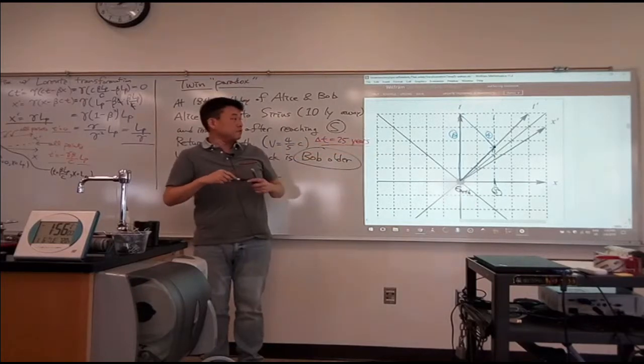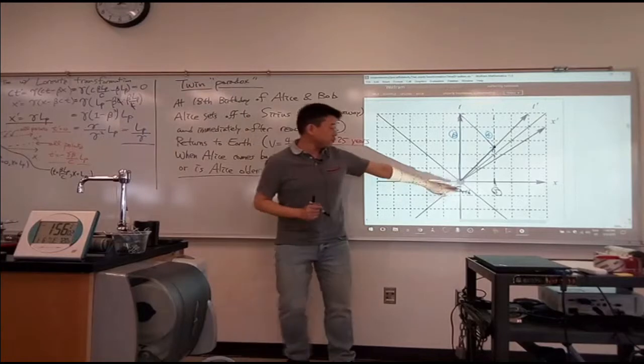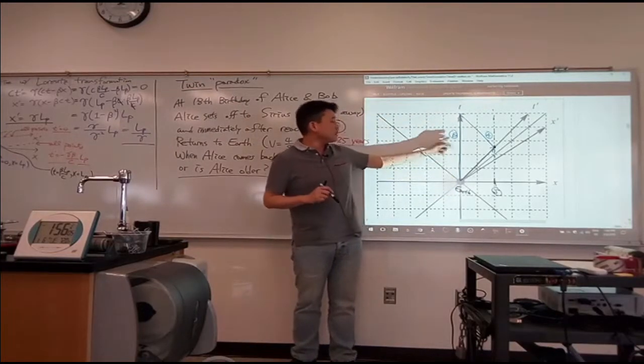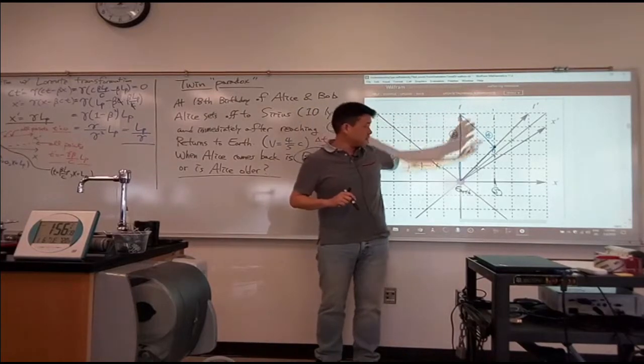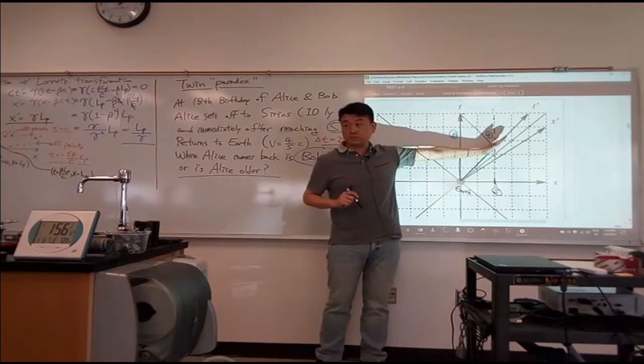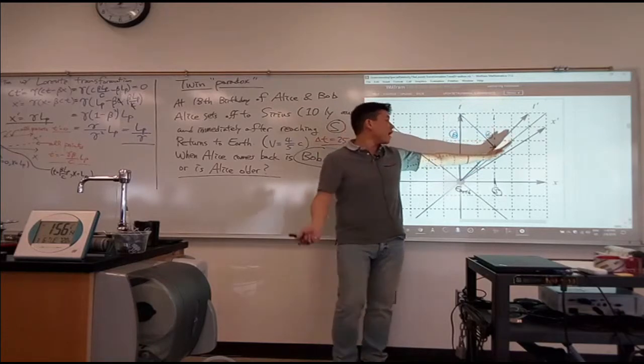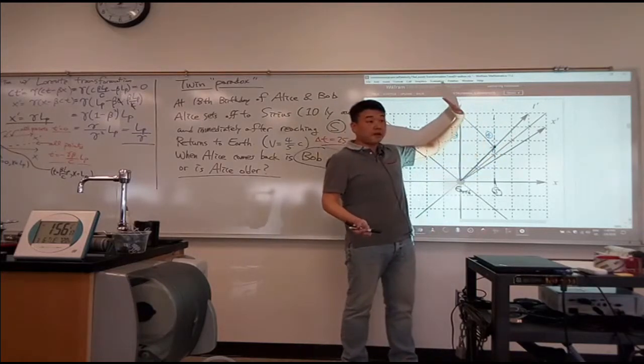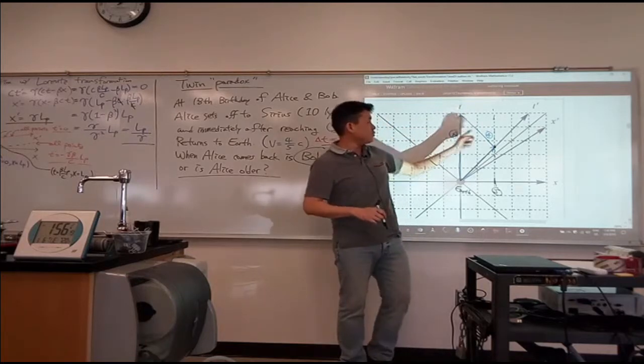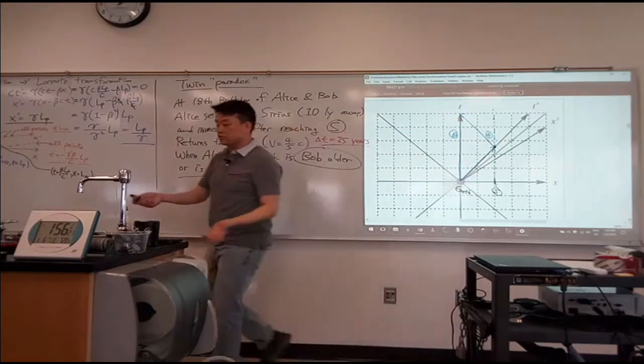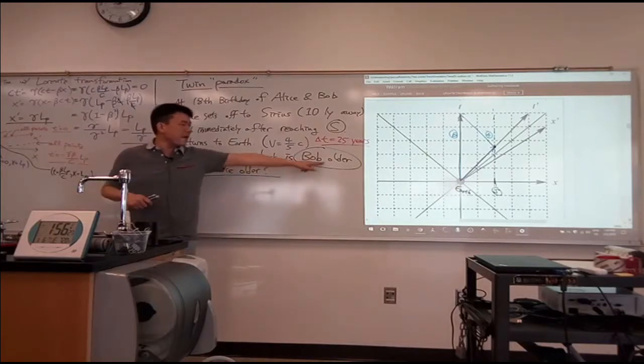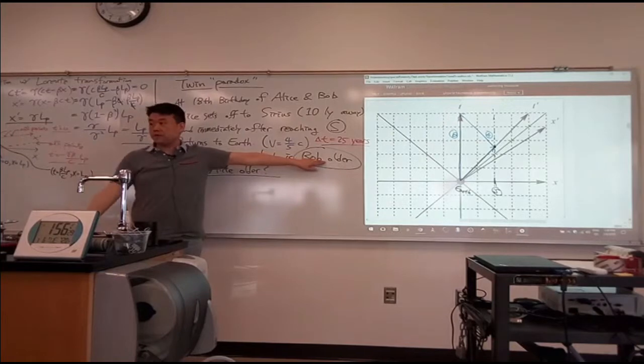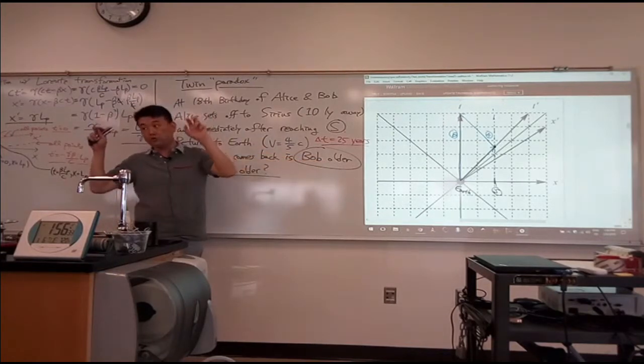Right? So, you know, for Bob who stayed on Earth, you know, he remained in one inertial reference frame the whole time. For Alice, she was in one inertial reference frame as she was moving away. And somehow, as she switches inertial reference frame, that's where these two are no longer symmetric. And you could more easily justify why you could. So, in saying that Bob is older, you are essentially saying that Bob's reference frame is the correct reference frame. Alice's reference frame is the wrong reference frame.